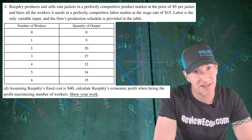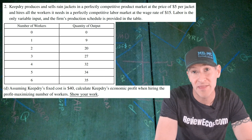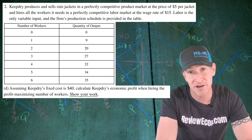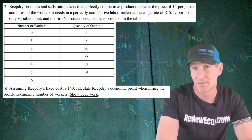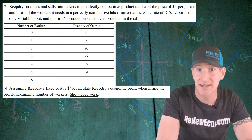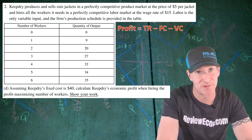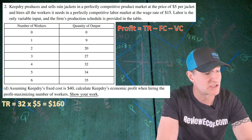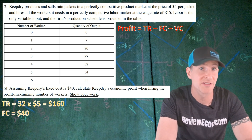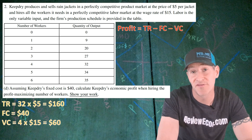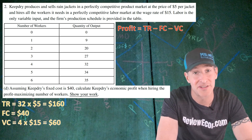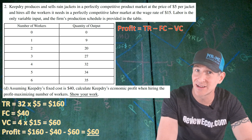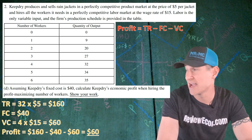For Part D, we are told that Keep Dry's fixed cost is $40, and we have to calculate the economic profit when they hire the profit-maximizing number of workers, showing our work. Note there are consistency points here, so if you didn't pick four workers previously, you could still get this point by calculating correctly. Profit is total revenue minus fixed costs minus variable costs. Total revenue is 32 units produced by four workers times the $5 price, which is $160. Fixed costs are $40, and variable cost is four workers times the $15 wage, which is $60. So profit equals $160 minus $40 minus $60, giving us $60 of economic profit. If you have that work shown, you get your next point.